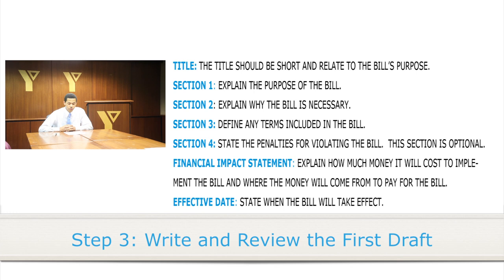I will outline the various sections for you. Title: The first section you must complete is the bill title. Your title should be short and state what your bill is about. Section 1: You want to explain what your bill does. Section 2: You will write the purpose of your bill — why is your bill necessary and important?